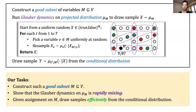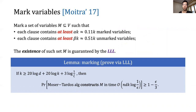So we have three tasks. First, construct a good subset M. Second, show that Glauber dynamics on projected distribution mu_M is rapidly mixing. Third, provide an efficient way to sample from the conditional distributions. The first step is to construct the set M of marked variables. Each clause is required to contain at least alpha·k marked variables and at least beta·k unmarked variables. This marking procedure was introduced by Moitra, though used for a different purpose. The existence of M is guaranteed by Lovász's Local Lemma, and we can use Moser and Tardos's algorithm to construct M.